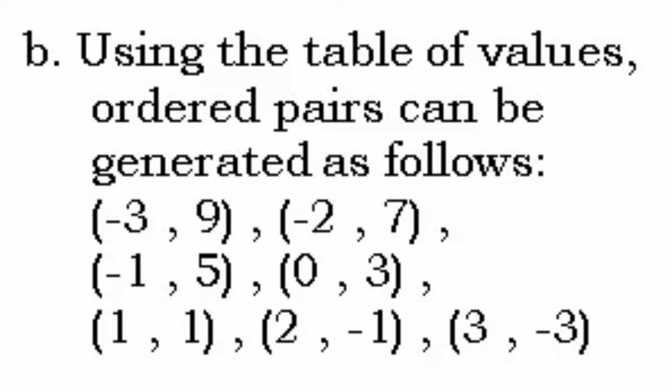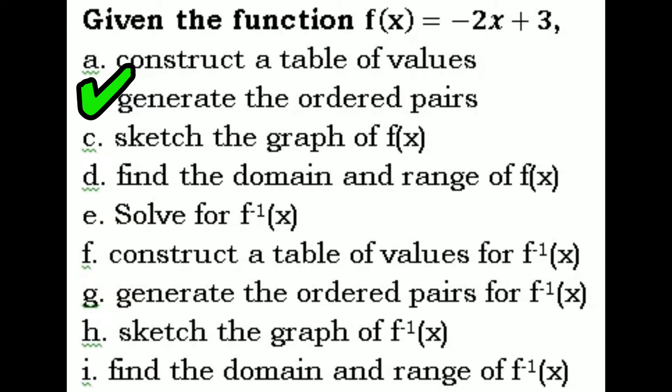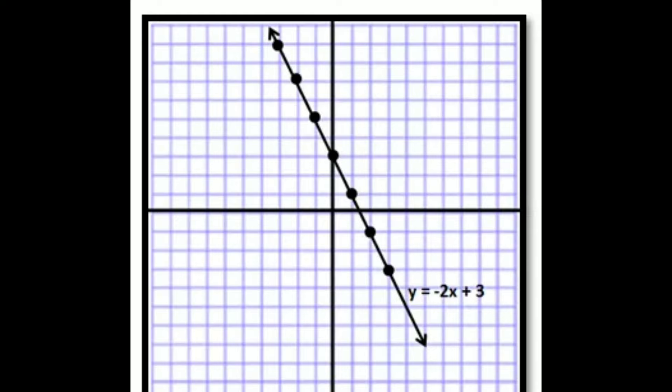Letter C: sketch the graph of f(x). This is now the graph of f(x) = -2x + 3. As you can see, it has arrowheads on both sides because the graph extends in both directions. For example, if x = 4, then y = -8 + 3 = -5. So f(x) will keep having values, and therefore the graph can be extended on both directions.